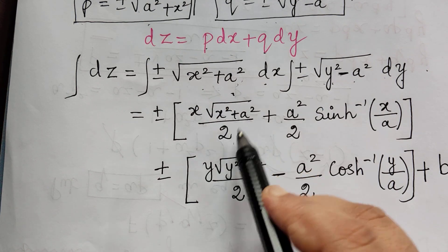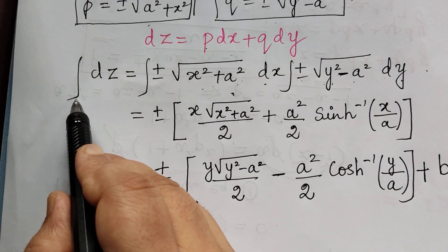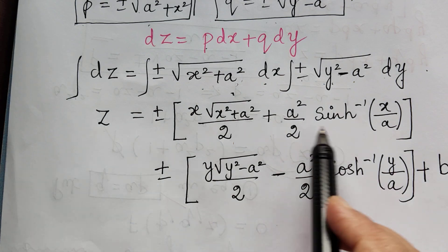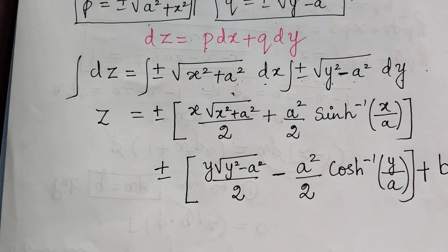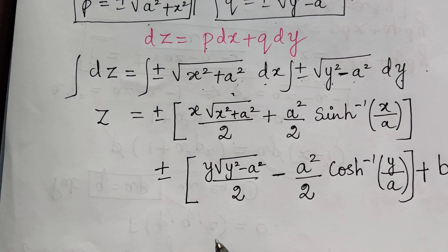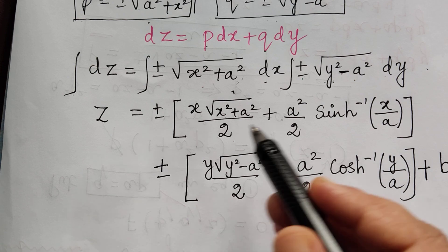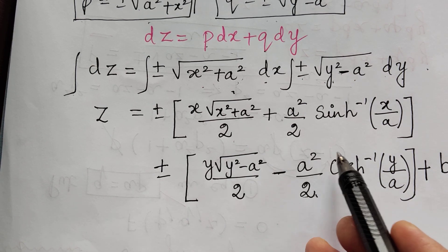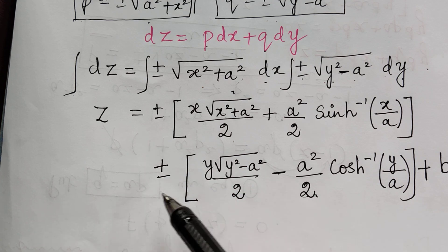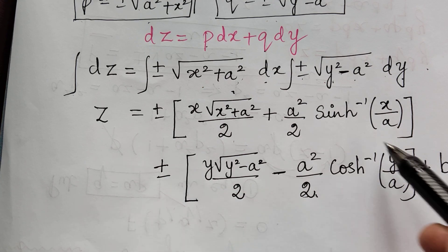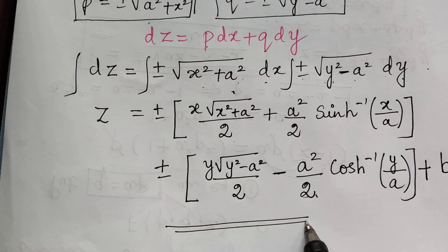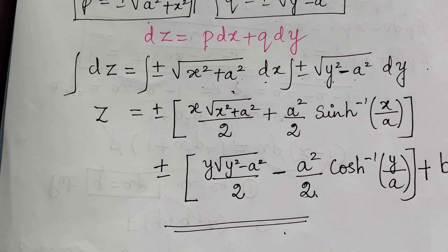This is the integration of the two terms. The integral of dz is z. Therefore, z equals this complete solution. You can simplify further by taking the 1/2 in the denominator common from all terms. Hope you have understood this problem. Kindly follow the next video lecture for problem number 5. Thank you.